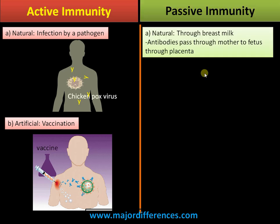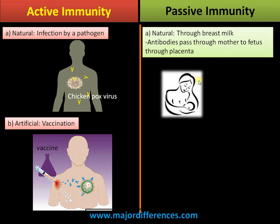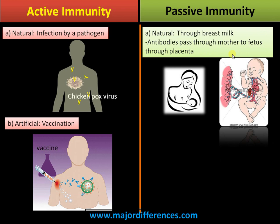Passive immunity may also be natural or artificial. The classical example of natural passive immunity is through breast milk — antibodies pass from mother to infant — and also before birth, antibodies pass from mother to fetus through the placenta. As newborns are incapable of synthesizing antibodies, they are more prone to infection.